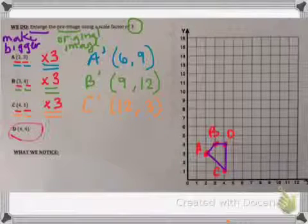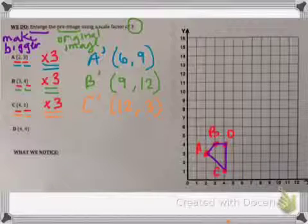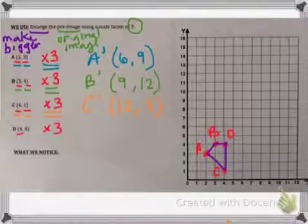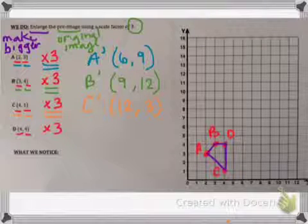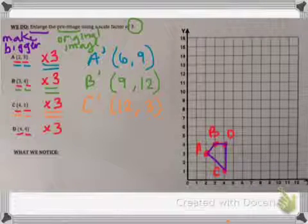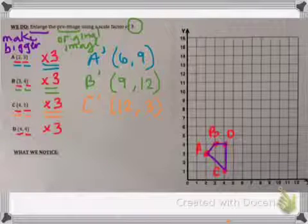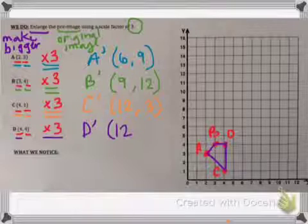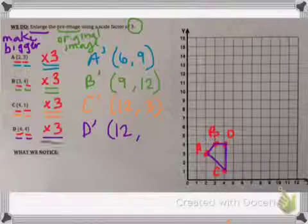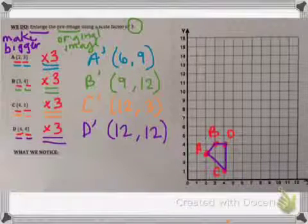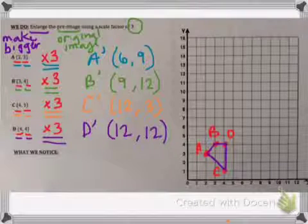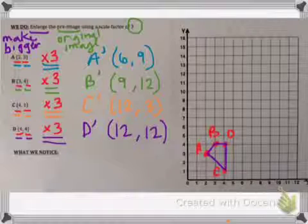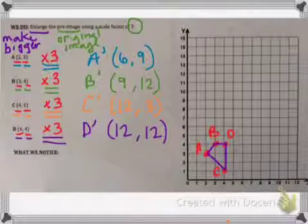And then let's look at point D, our last point — times 3. 4 times 3 gives 12 for the x-coordinate, and 4 times 3 gives 12 for the y-coordinate. So D prime is at (12, 12). Now we've multiplied all coordinates by our scale factor of 3.